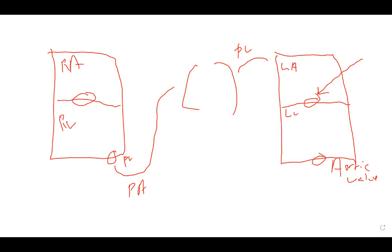With aortic valve stenosis you might have left ventricular hypertrophy; with mitral valve stenosis you might have left atrial enlargement. They don't really call it left atrial hypertrophy — they call it left atrial enlargement. For ventricles, we say 'left ventricular hypertrophy' or 'right ventricular hypertrophy,' but for atria we use 'right atrial enlargement' or 'left atrial enlargement.'